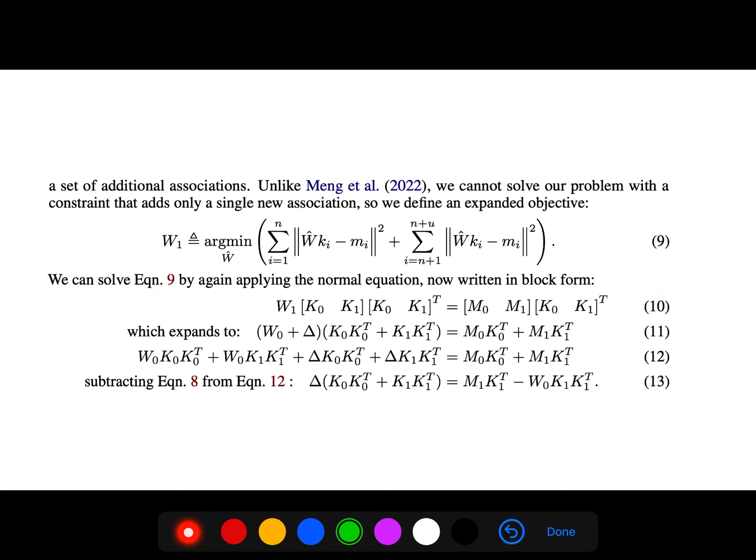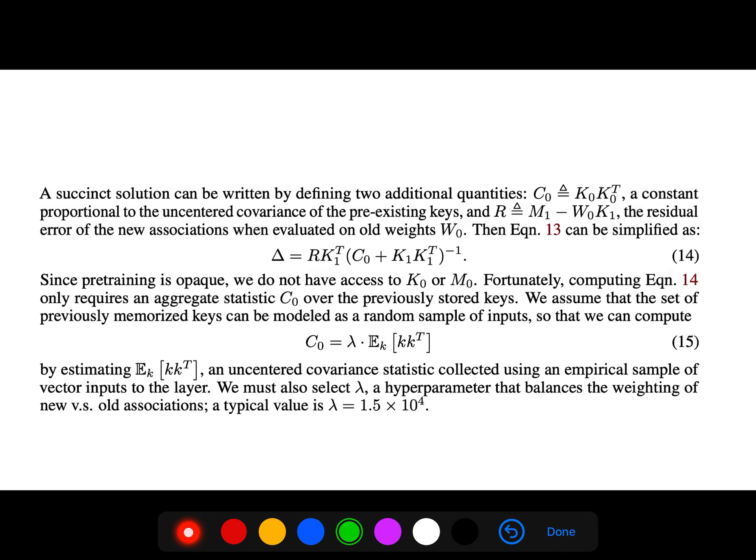We cannot solve our problem with a constraint that adds only a single new association. So we define an expanded objective by again applying the normal equation solution now in the block form. A succinct solution can be written by defining two additional quantities.